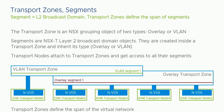Here's a simple example. ESXi transport node 1 is attached to the VLAN transport zone and runs NSX. If you go to vCenter and look at the networking tab, you will see segment 1 as an available segment in the UI, meaning you can attach a virtual machine to that VLAN segment 1.